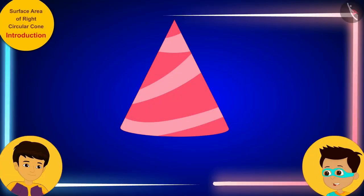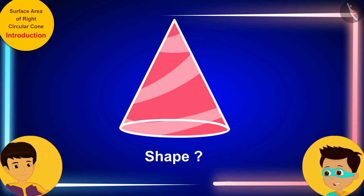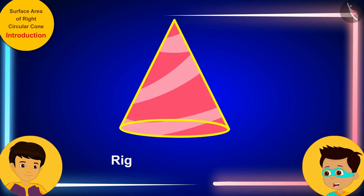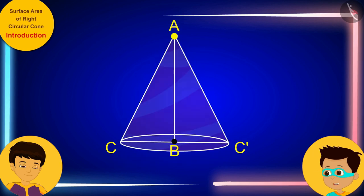Manas, can you tell me by what name is this shape of the hat better known? I don't know Thomas. We call this shape of the cap a right circular cone. Here, point A is called the vertex of this right circular cone. AB is its height and BC is the radius of its base.